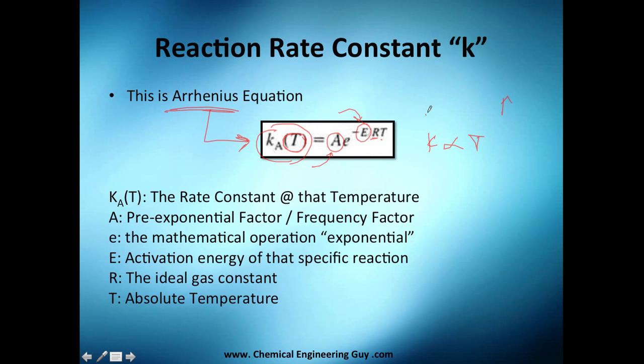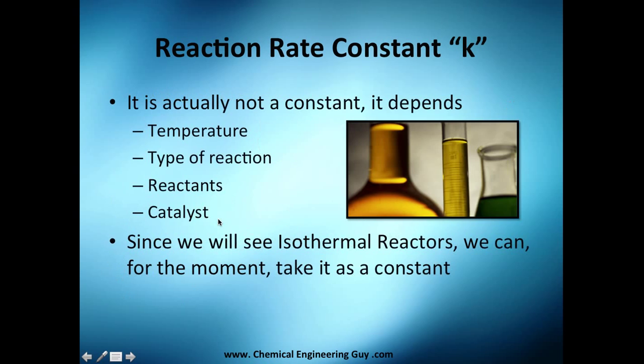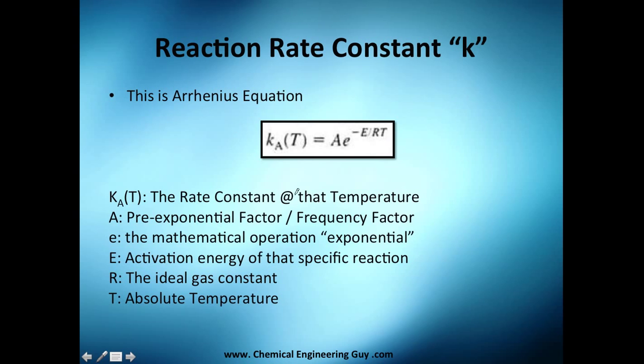And in general, as temperature decreases, K decreases. So let me explain what each letter is. K as a function of T - this value is the rate constant at that temperature. This letter A is the exponential factor or frequency factor, we're going to talk about that later.